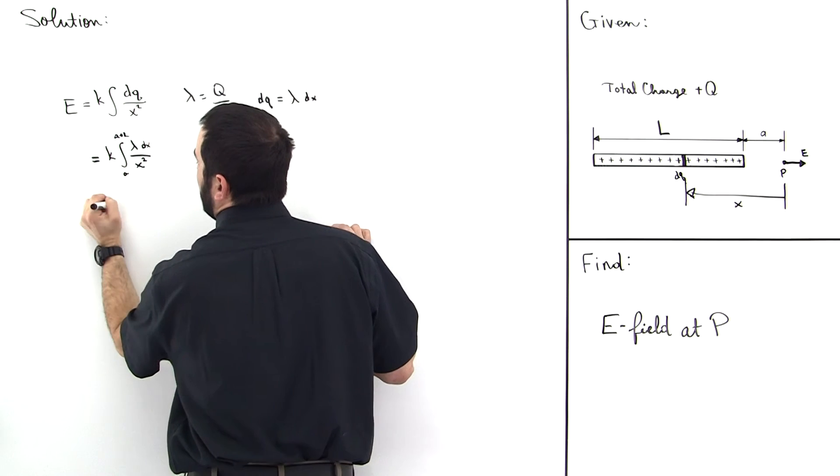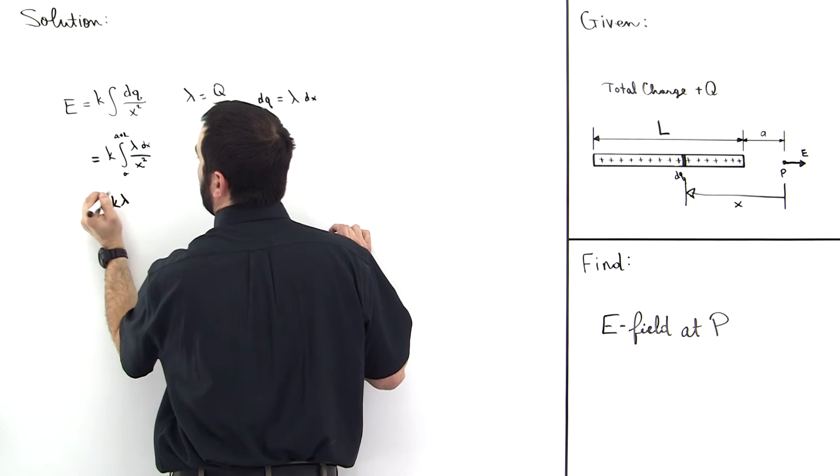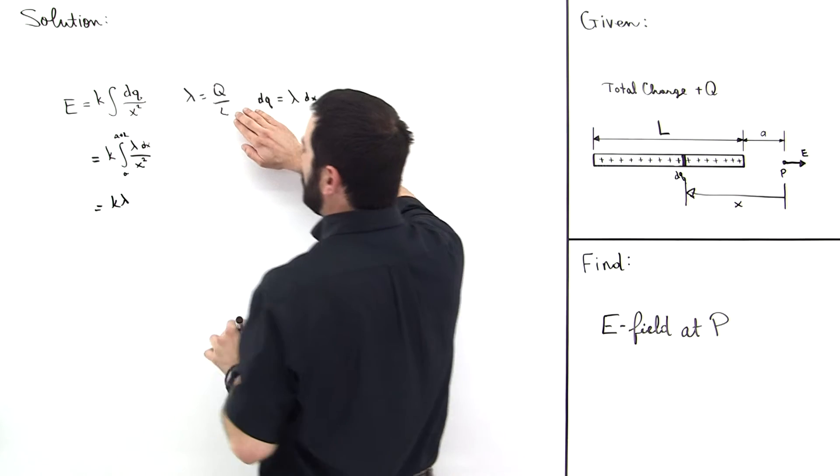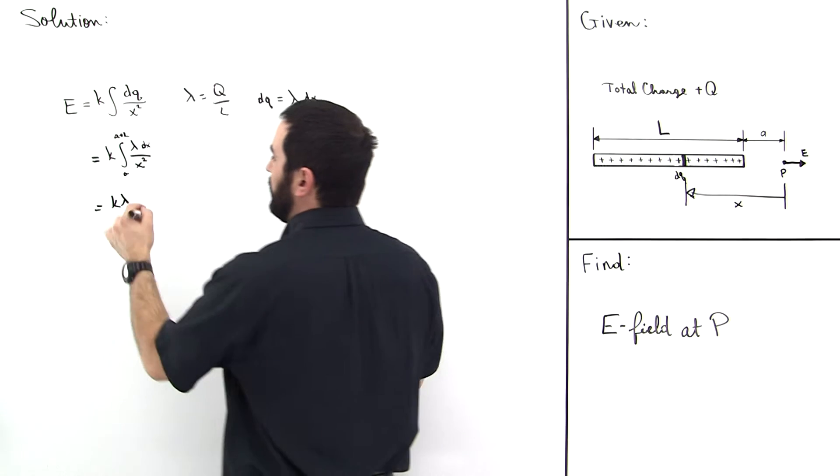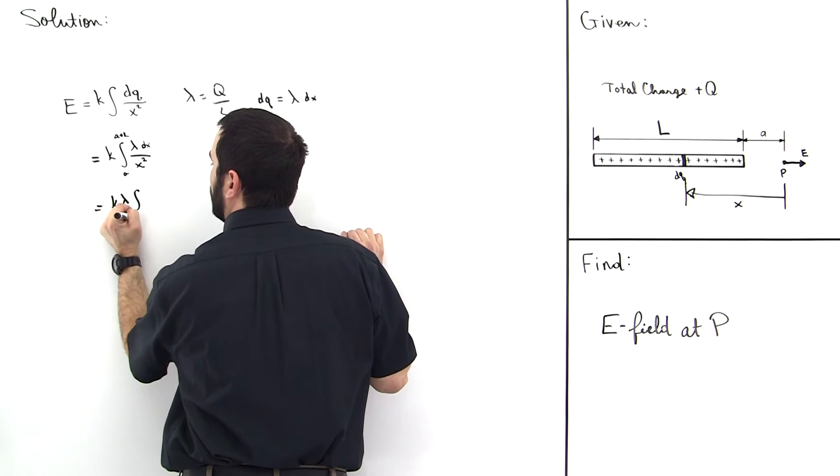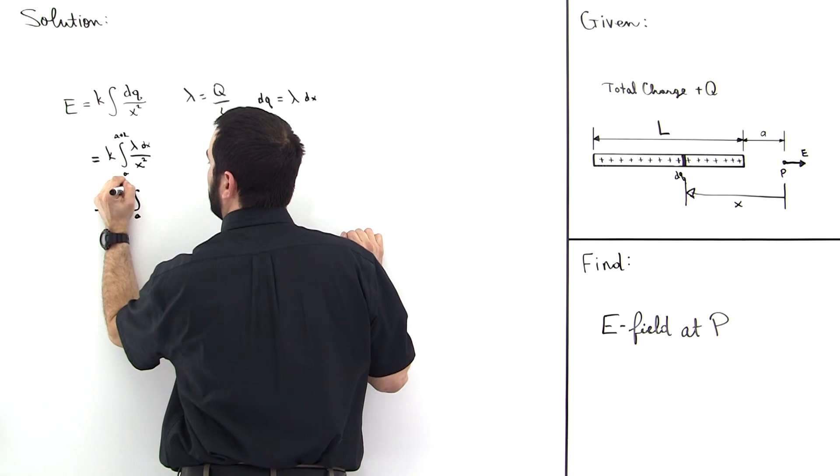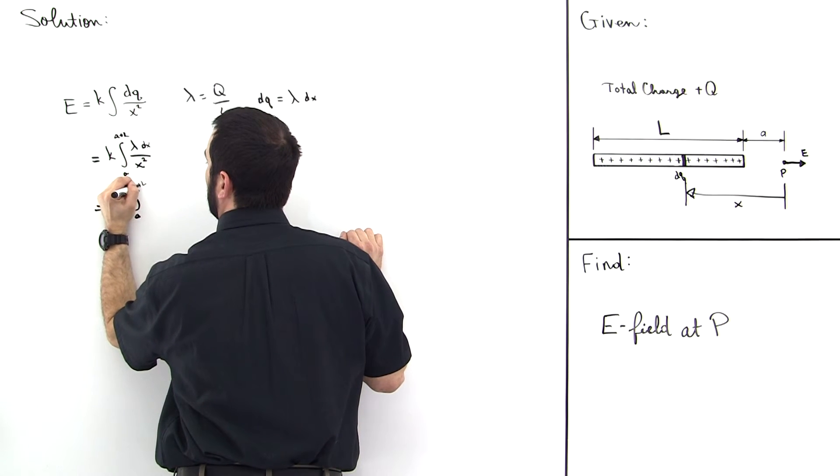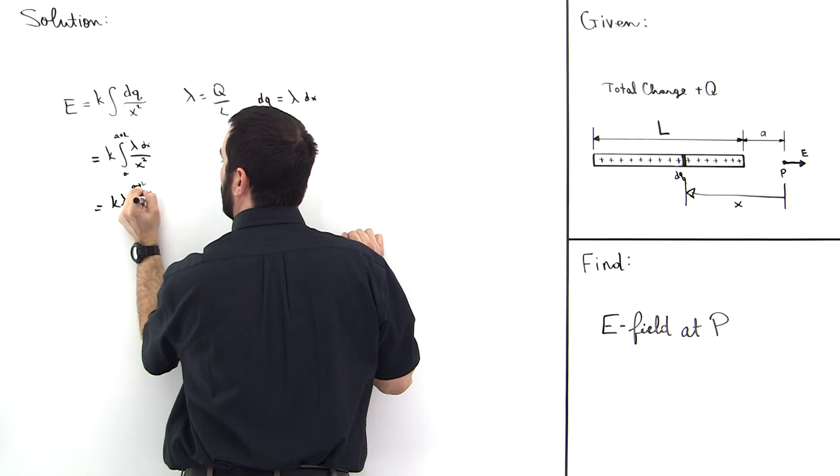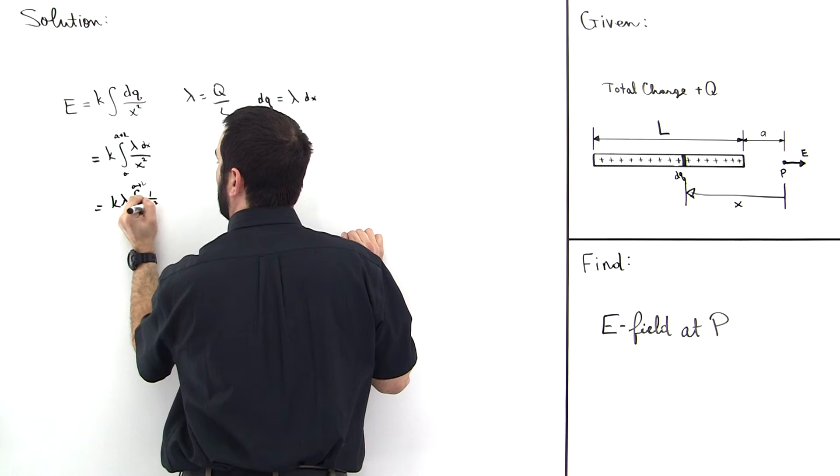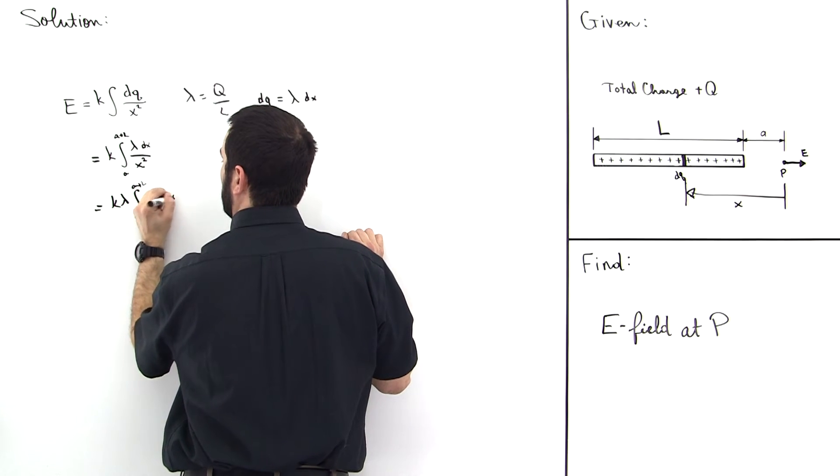K Lambda factors out because Lambda is a constant. Q and L are both constants, so Lambda is a constant. So we factor it out, and then we get integral from A to A plus L. That's going to be 1 over X squared dX, like this.